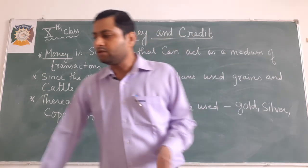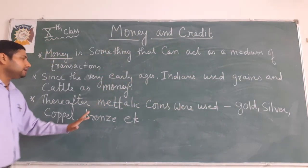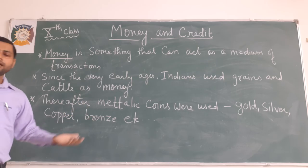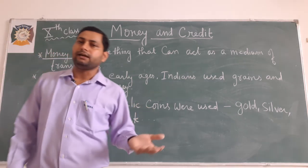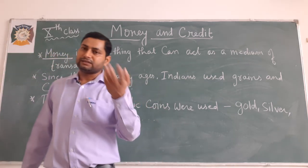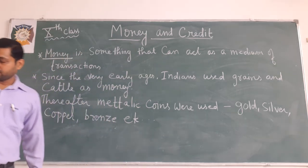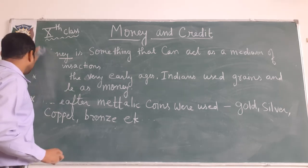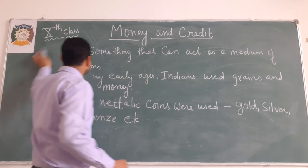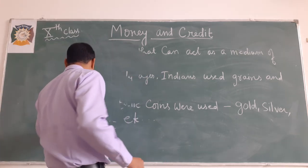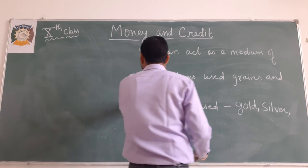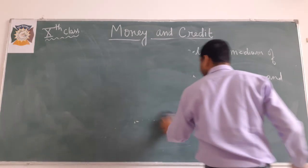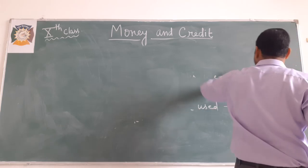This phase continued well into the last century — even up to the 13th or 14th century this continued. Then gradually new forms of currency took their place, which we call the modern form of money. The very first modern form is currency. Let us understand what currency is.